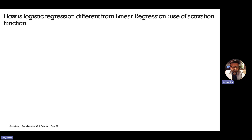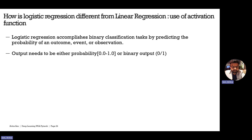First of all, we will discuss how logistic regression is different from linear regression. In case of linear regression, we are doing W transpose X plus B, which is the output of the output layer. That is an unbounded value — it can take any values. But in case of logistic regression, it performs binary classification by predicting the probability of an outcome for an observation. Since we are predicting a probability, it should be within the range of 0 to 1.